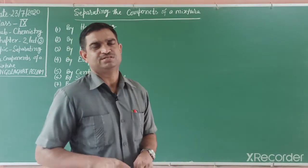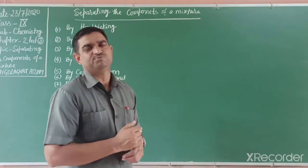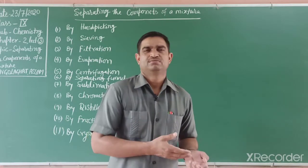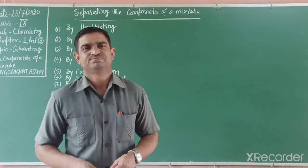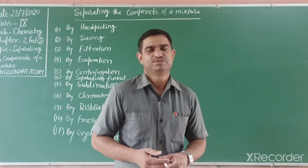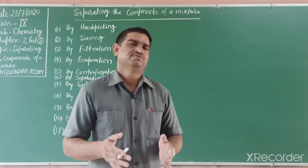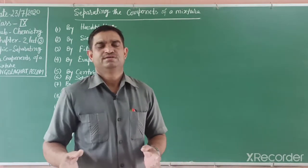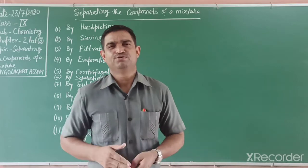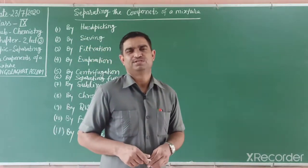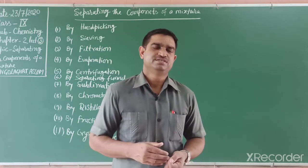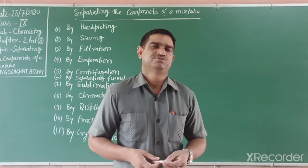Today we discuss how we can separate the components of a mixture. In your earlier classes you studied how to separate different components of a mixture, and in our day-to-day life we also do this. For example, in grains — wheat, gram, bajra — if stone particles are present, we remove them by hand picking. Then we get flour for making chapati. When making tea, we remove the tea leaves by sieving.